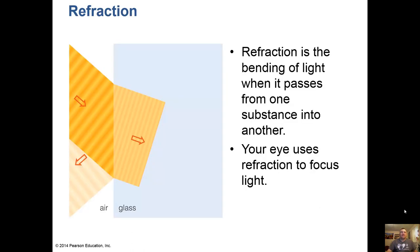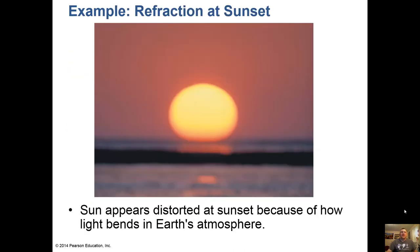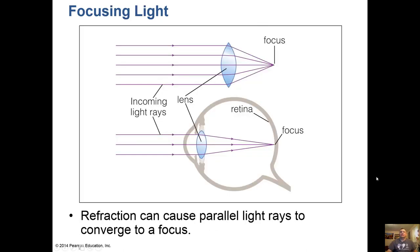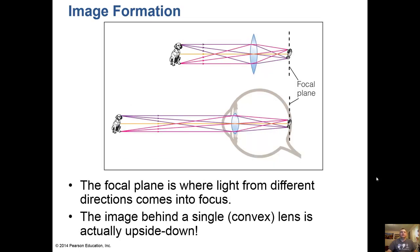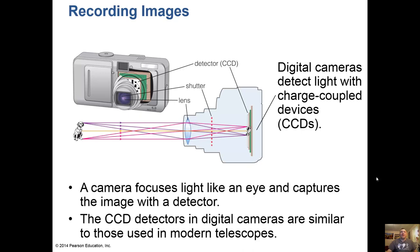The process of refraction is the bending of light when it passes from one substance to another. Your eye uses refraction to focus light. At sunset, the Sun appears distorted because of how light bends in Earth's atmosphere. Our eyes and lenses focus light into a point — we call that point the focus — and that point goes to the retina into the optic nerve.